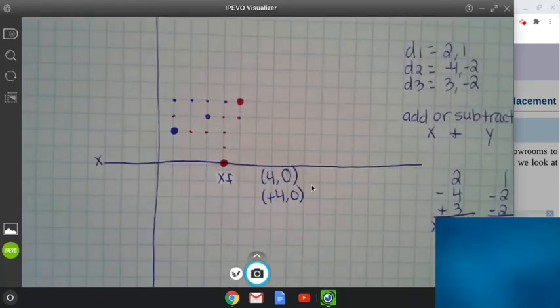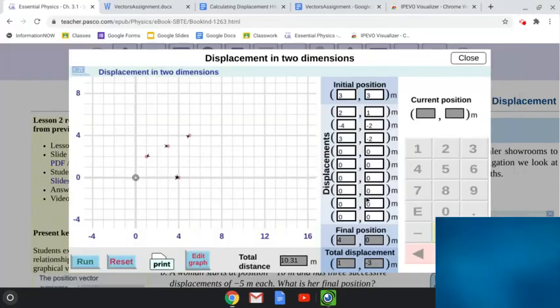So here's our position, 4, 0. And then our total displacement is plus 1, negative 3. So we have the same values without doing all of the written out. So over here, you can see, this is representing my graph paper.